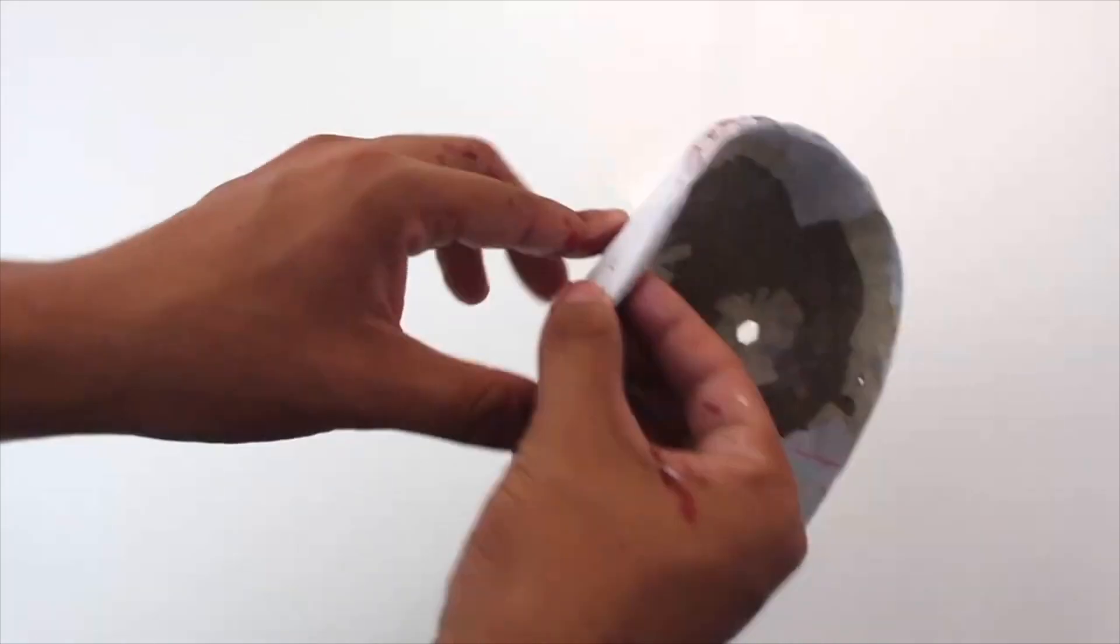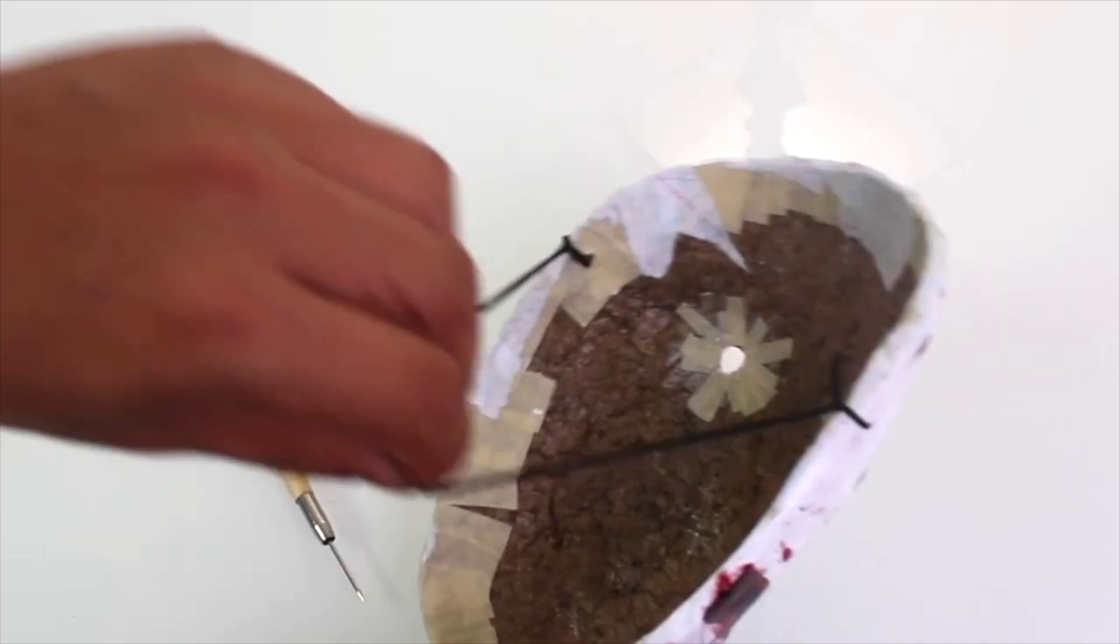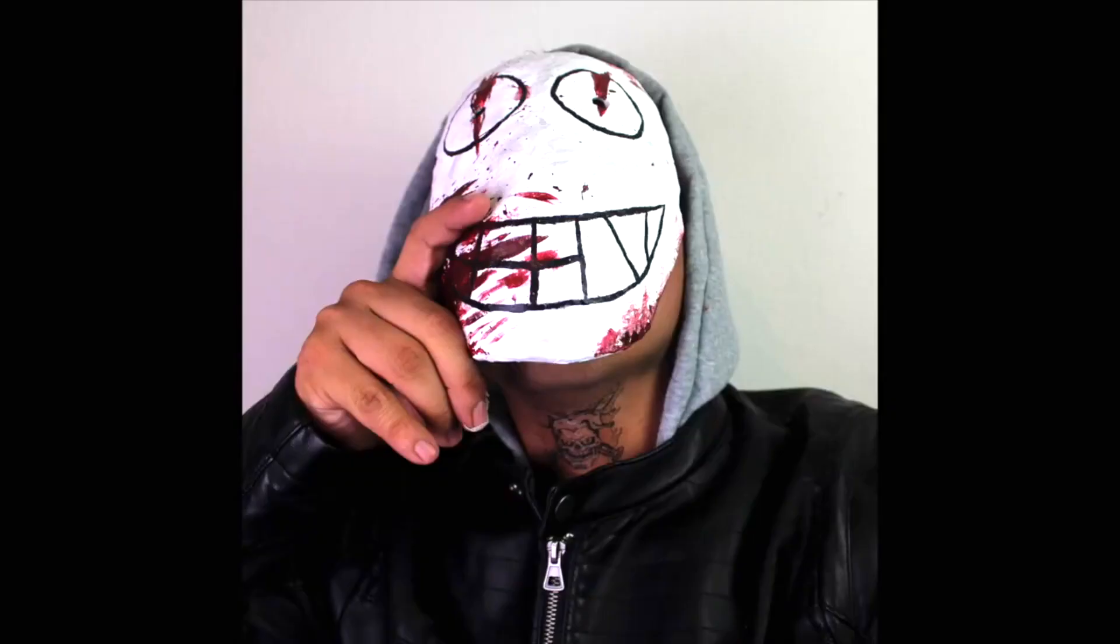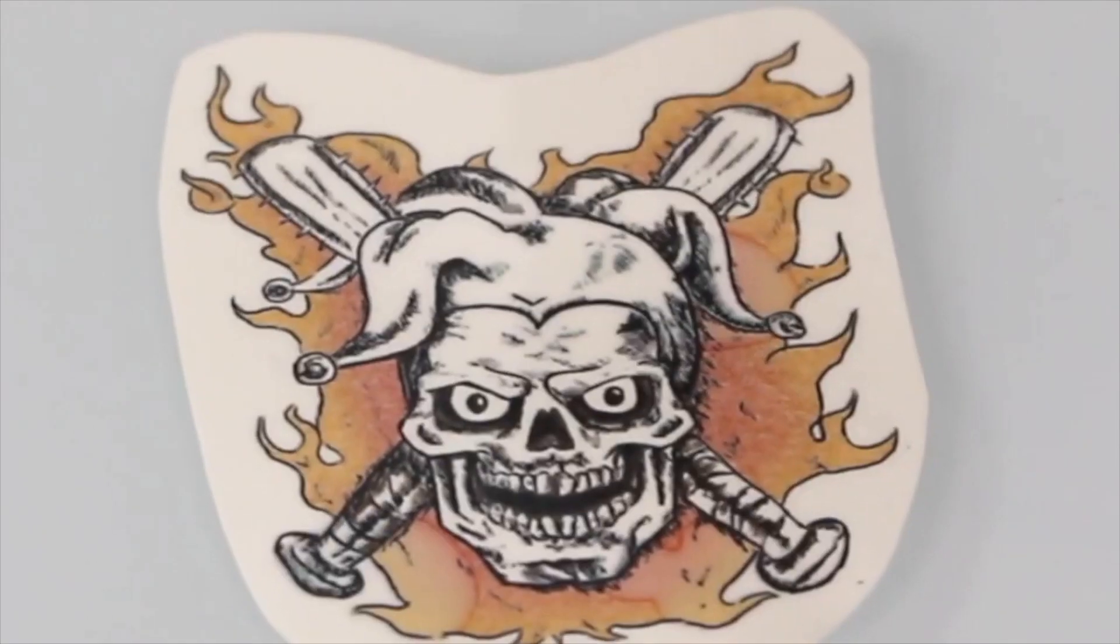After that, get your black string and tie it into the holes. The Legion mask is finished. For the Legion cosplay I have a black jacket and Frank's neck tattoo. You can find the links down below in the description.